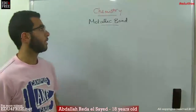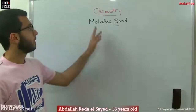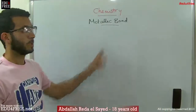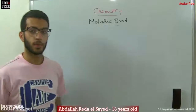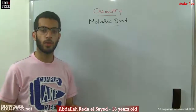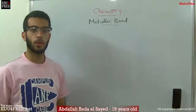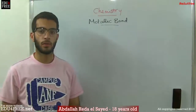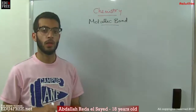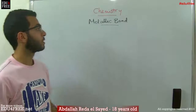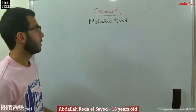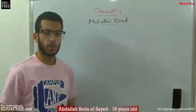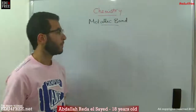This time we are going to talk about the metallic bond in chemistry. Previously, we mentioned the ionic bonds, the covalent bonds, the hydrogen bonds. Today, we are going to talk about the metallic bonds.